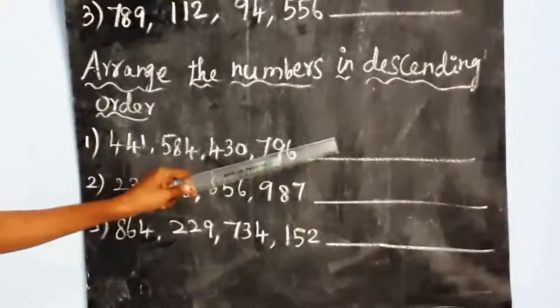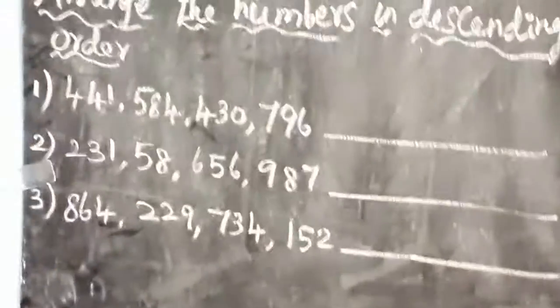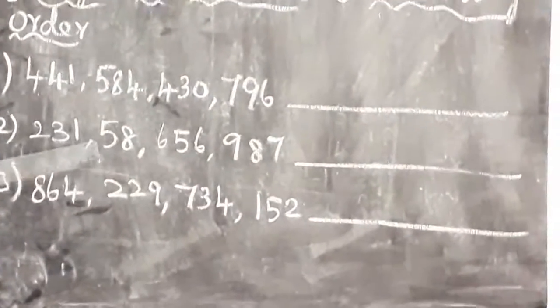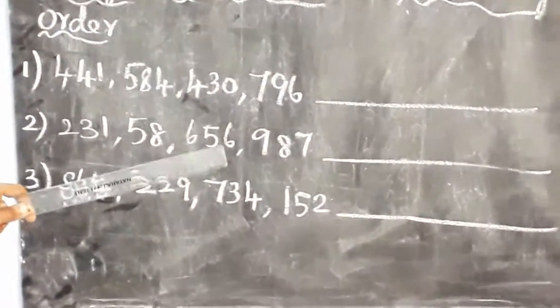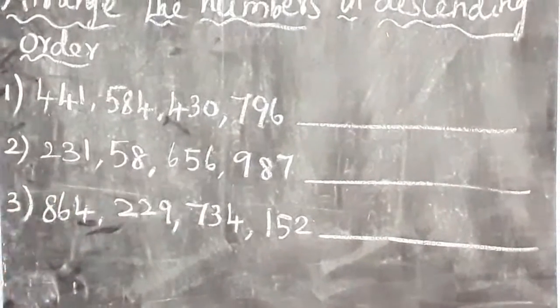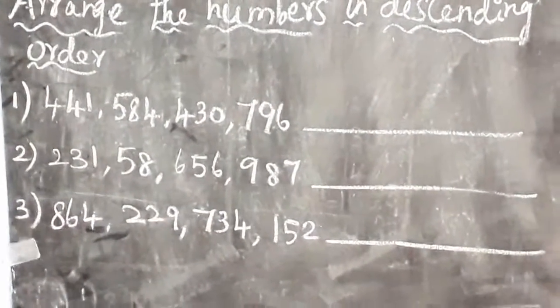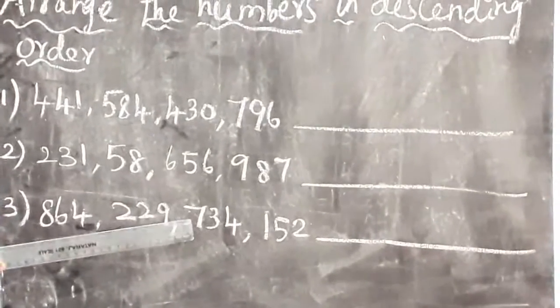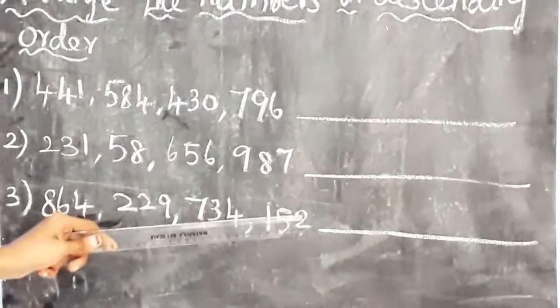Just write the answer from greatest to smallest. Then second sum: 231, 58, 656, 987. Then third sum: 864, 229, 734, 152.